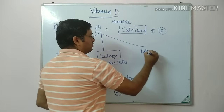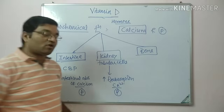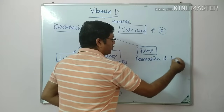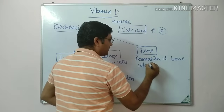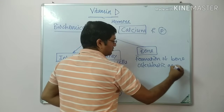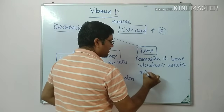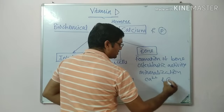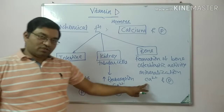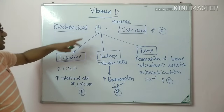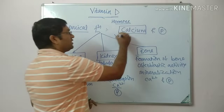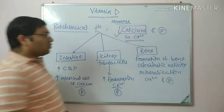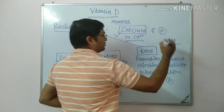In bone, vitamin D is responsible for formation and remodeling of bones. It is responsible for osteoblastic activity and increases the mineralization of bone — the deposition of calcium and phosphorus in the bone — thereby helping in bone formation. It increases the serum calcium level and regulates calcium along with parathyroid hormone and calcitonin.